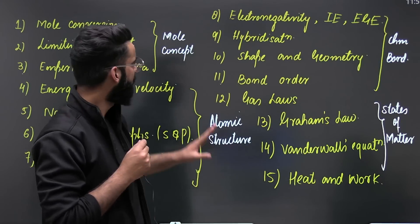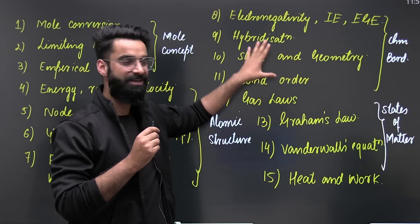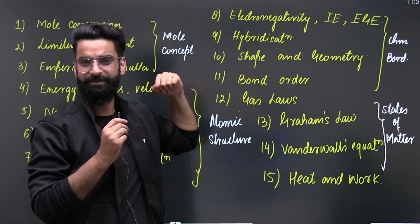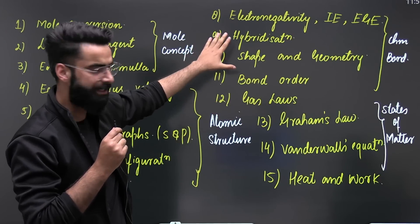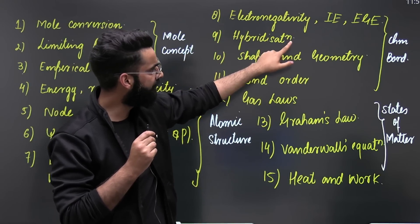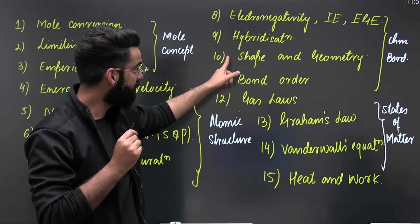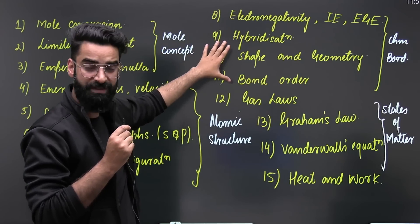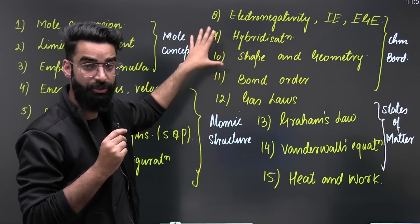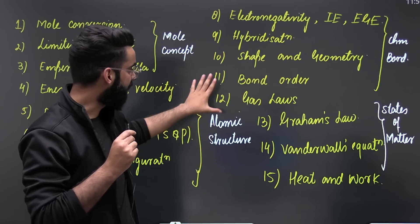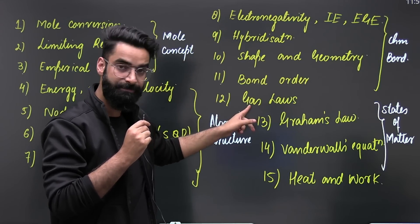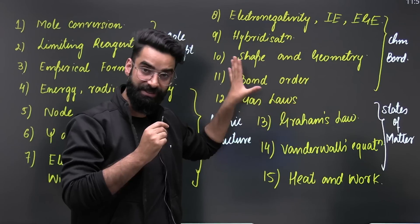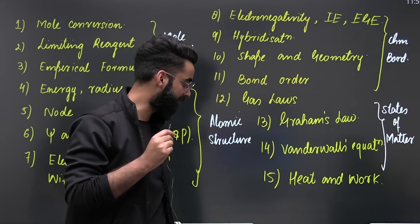Chemical bonding is one of the most important chapters of your chemistry, and you easily get some three to four questions from chemical bonding. You have got electronegativity, ionization energy, electron gain enthalpy, hybridization, shape and geometry, and bond order. These are the four to five topics from chemical bonding which I would want you guys to do on priority. Similarly, you have got states of matter which includes the gas laws, Graham's law of effusion and diffusion, and van der Waals equation. These are the three short topics from gaseous state and states of matter.